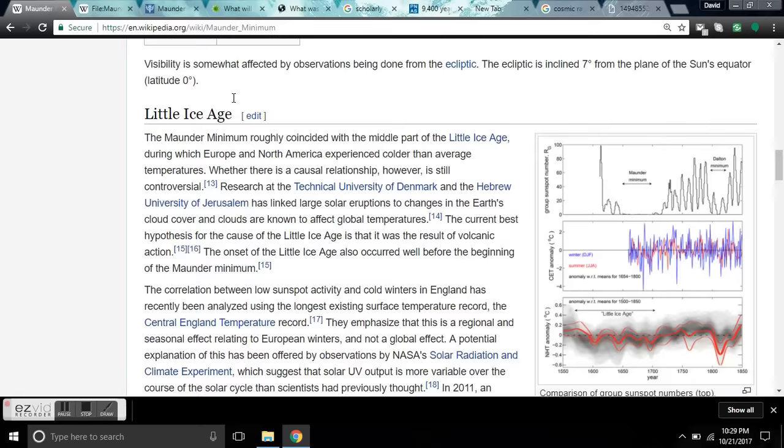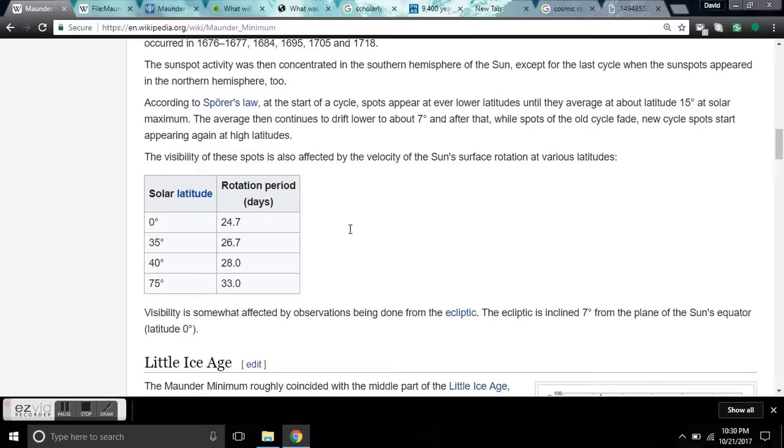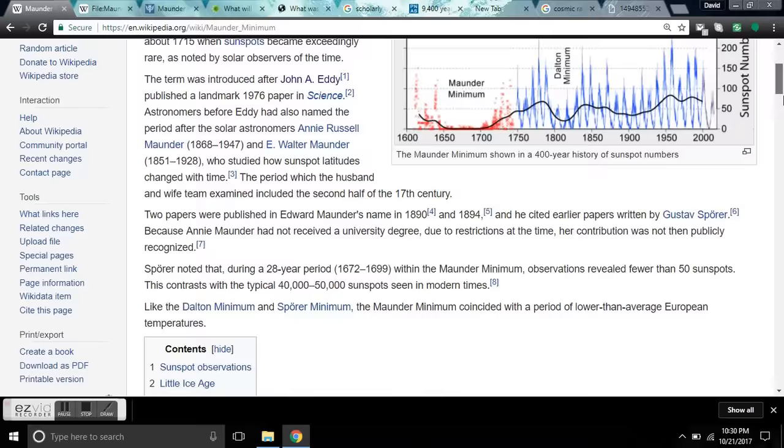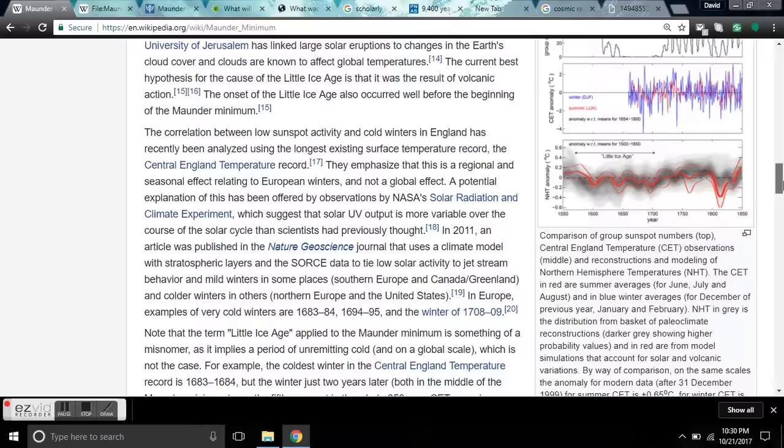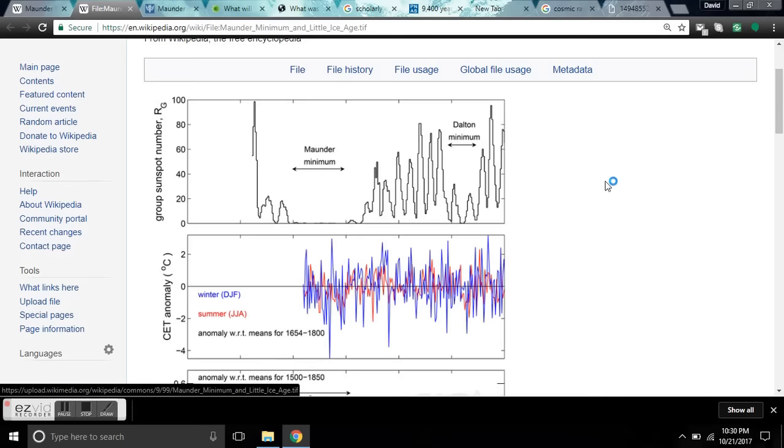Now, why is that important here? I want to describe to you here the significance of this particular graph, which I'll leave a link to it. This is the wiki on the Maunder Minimum. So, here's the graph. And this is sunspot numbers here. And this is the temperature anomaly, 1654 to 1800.